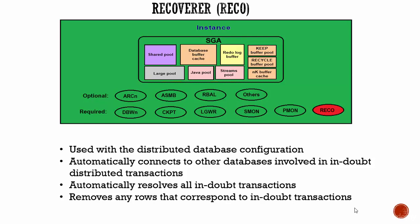We know that for the success of the transaction, the row needs to be inserted in all three databases, but the second and third databases are down. In such scenarios, whenever the second and third databases come back up, the recoverer process automatically connects to them and resolves all in-doubt transactions. In our example, in the second database we had inserted a row, so it will remove that row. In the third database we didn't insert any row, so it doesn't do anything.